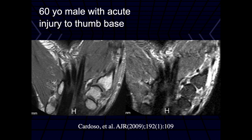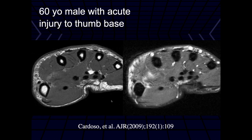This is actually a pretty high-grade sprain of the dorsal and the anterior oblique ligament, which are the capsule in those locations. It should be a nice thin black line going across, but these are tears of those ligaments.